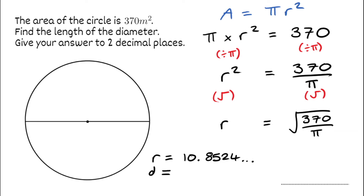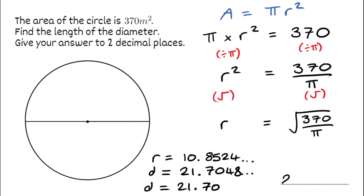Doubling the radius gives us 21.7048 and a few extra — that's enough to round. So the diameter to two decimal places is 21.70. If the area was in metres squared, that means our length dimension is going to be in metres.